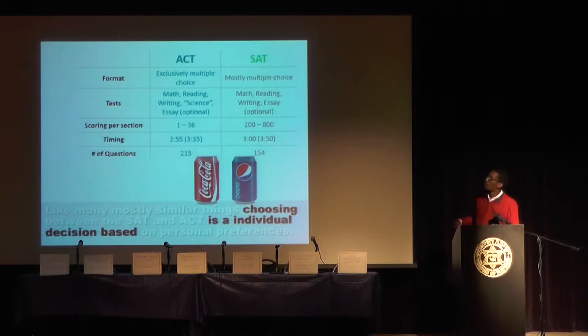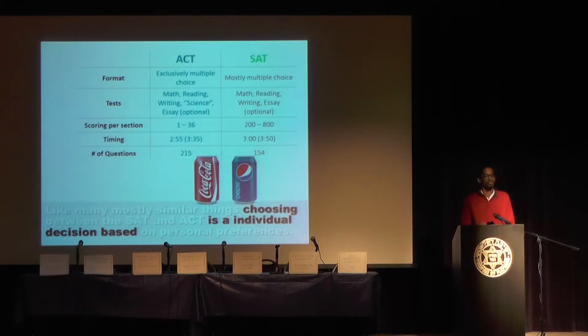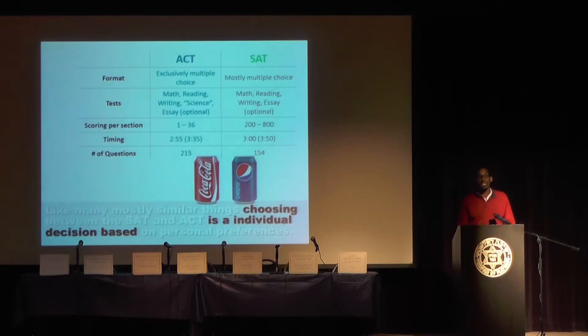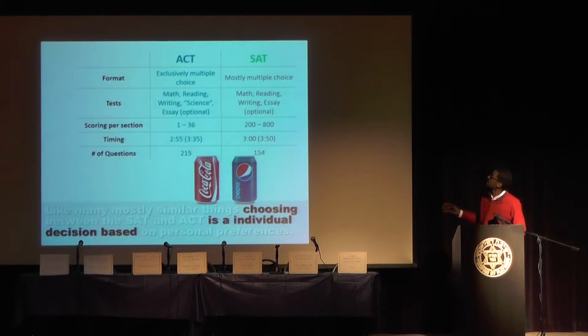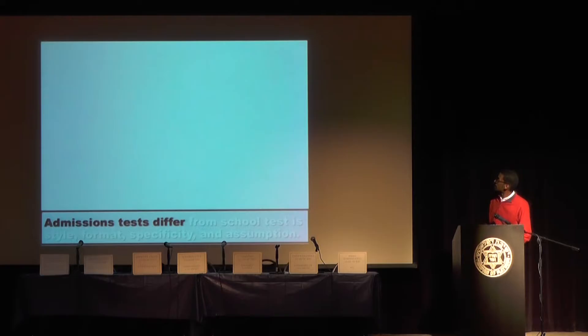Let's look at some differences between the tests. Fundamentally, SAT versus ACT is Coke versus Pepsi, Marvel versus DC — really the same thing but a different variation. They're both about four hours, they both have reading, math, writing, and what I'd call fake science — neither of them has actual real science. What was the science on the ACT? Reading graphs. They're calling that science — it's reading charts and graphs. So don't be afraid of science on these tests.